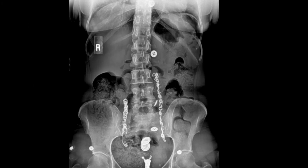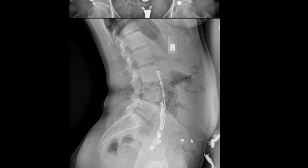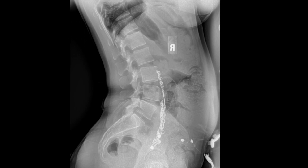A common question is: what are the metallic densities seen on this lumbar radiograph? These are embolization coils, and they're used as a treatment for pelvic congestion syndrome. This treatment helps relieve pain by closing off abnormal veins so they can no longer enlarge with blood.